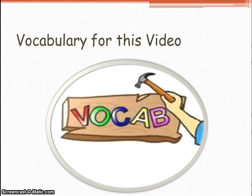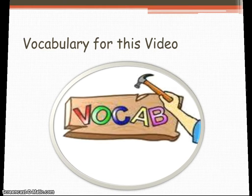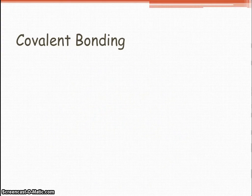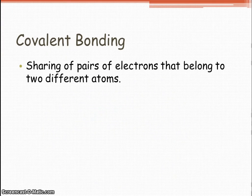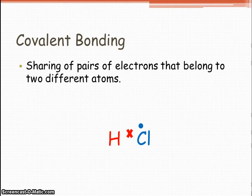Vocabulary. Covalent bonding. The sharing of pairs of electrons that belong to two different atoms. So for example, we'll have hydrogen and chlorine. Chlorine has seven valence electrons, and it wants one more. Hydrogen has one valence electron, and it wants one more. We'll explain this more later on in the video.